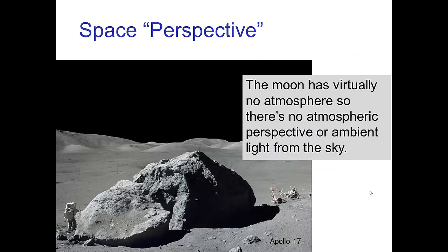It's very different yet in space. Here we see a photo from one of the lunar missions, and obviously there's no atmosphere. So there's no atmospheric perspective and no ambient light from the sky. Shadows are very hard. It's very difficult to estimate distances — we don't know if these are nearby hills or very distant mountains because we have no atmospheric perspective to provide a visual cue for distance.